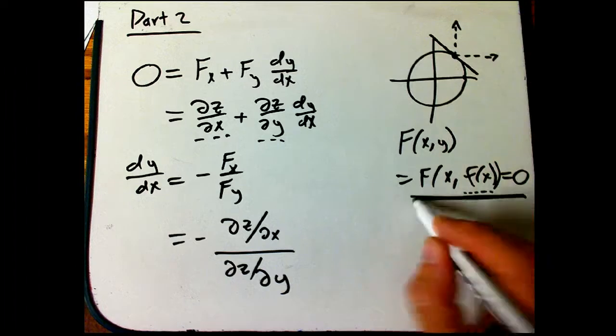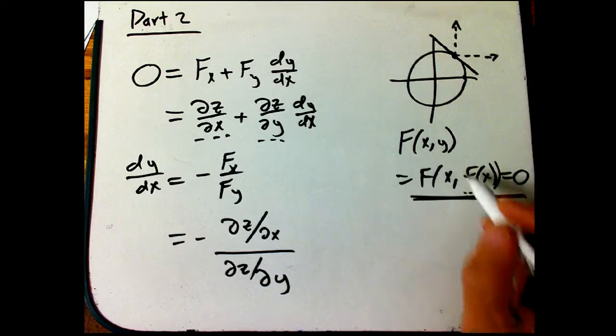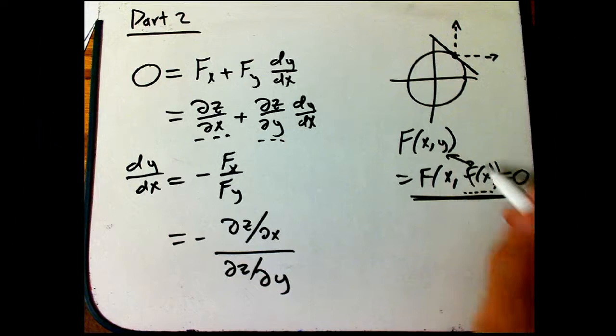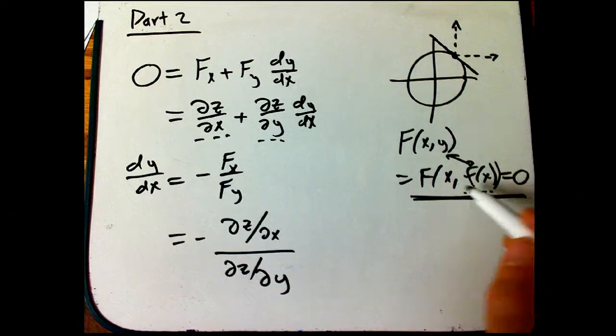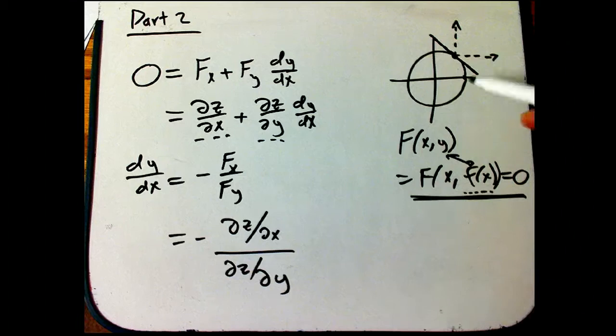What that's going to tell us is how to play off those rates of change so that we get rate of change zero. Because that's the key thing, is we want to know what's the relationship that y and little f of x have to have, at least in terms of their derivatives, so that we don't get any change in the big F function.